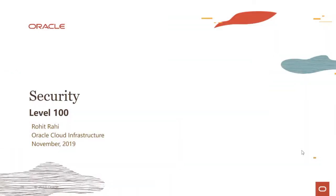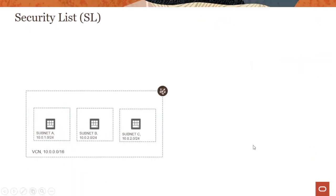My name is Rohit Rahi and I'm part of the Oracle Cloud Infrastructure team. In this module, we'll look into security lists and network security groups — the two mechanisms by which you can enforce security within the virtual cloud network service.